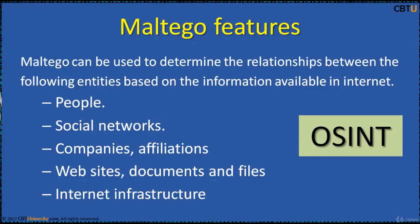Maltego can be used to determine the relationships between the following entities: people, names, email addresses, aliases, groups of people, social networks, network of networks, companies, affiliations, websites, documents and files, internet infrastructure such as domains, DNS names, and IP addresses.